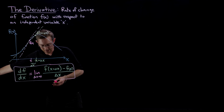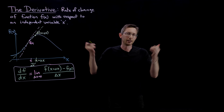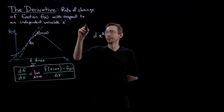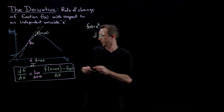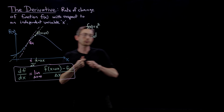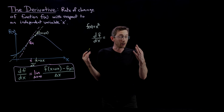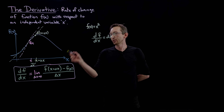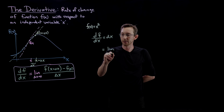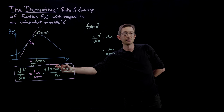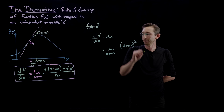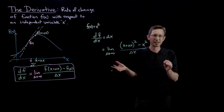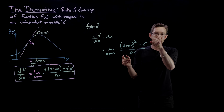Let's do an easy example: the derivative of x squared. So f of x equals x squared. The derivative df/dx — most of you remember this is 2x. I'm going to use the limit formula to confirm that. df/dx equals the limit as delta x goes to zero of f(x + delta x) minus f(x) divided by delta x. That's x plus delta x, all squared, minus x squared, divided by delta x.